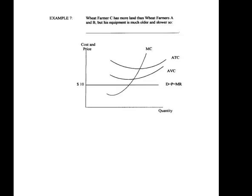This is Wheat Farmer C, who has more land than Farmers A and B, but his equipment is much older and slower—so his costs must be higher. To do this graphical analysis, find the marginal cost curve, follow it until it intersects with the marginal revenue curve, and go straight down. Then draw a vertical line through your graph at that quantity to identify all the important values.